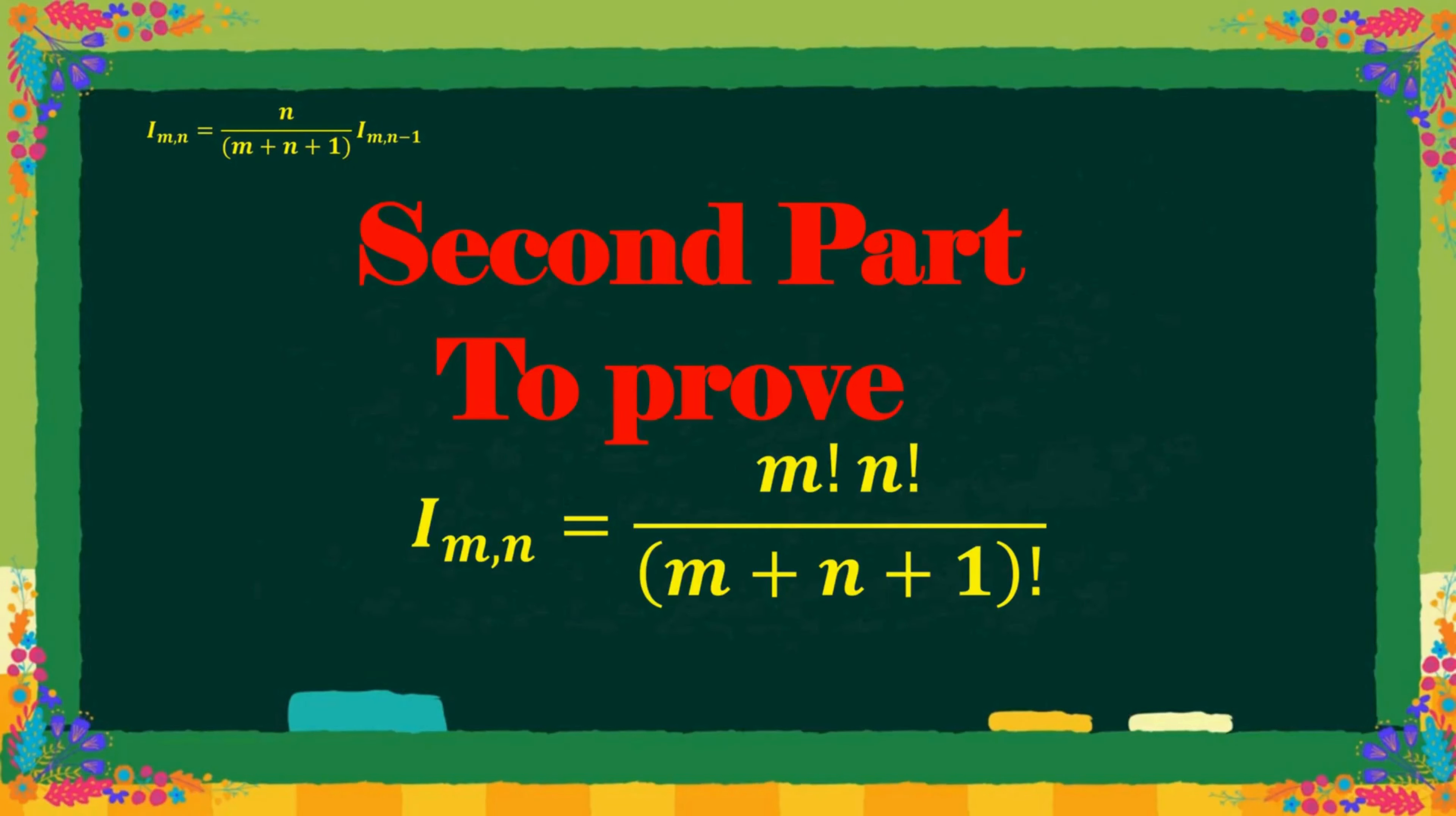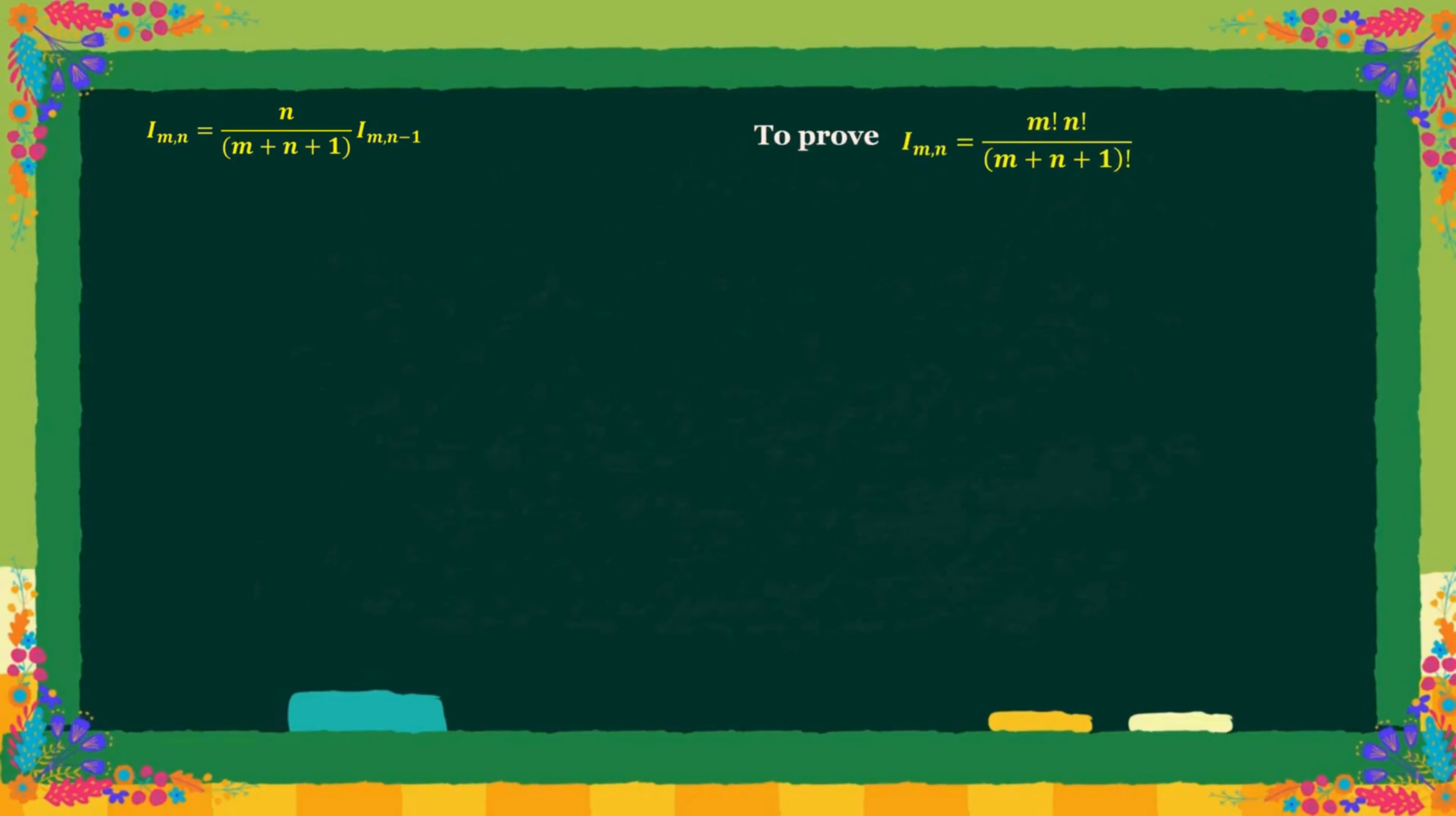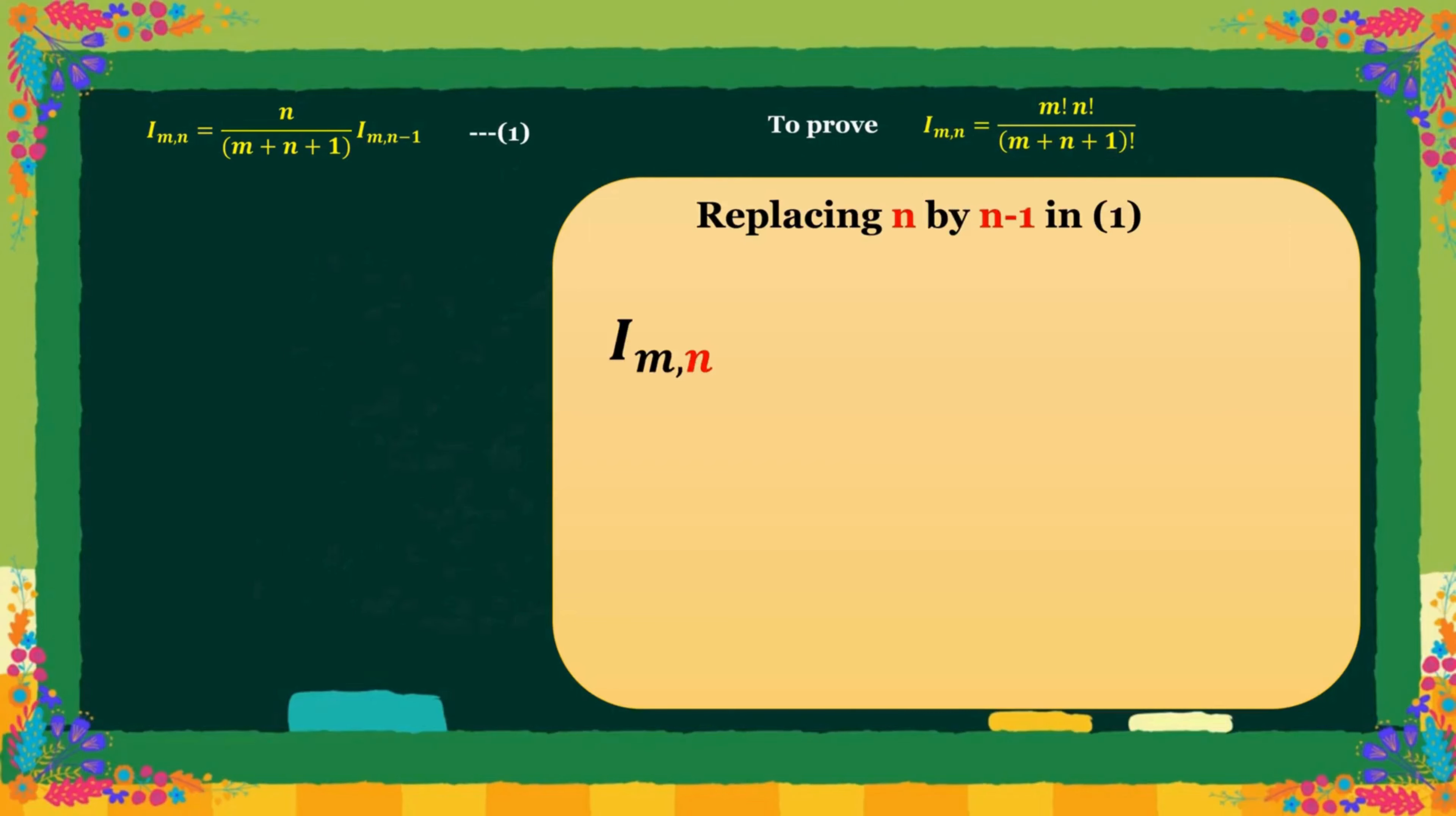For the second part, we mark the reduction formula by 1. Replacing n by n minus 1 in equation 1, we get I m n minus 1. We mark this value by 2.